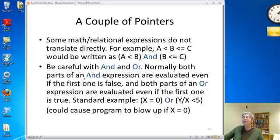Now, you have a couple things to watch out for. Informally, when we write math, we sometimes write something like A less than B less than or equal to C. You cannot do that in programming. Okay, you have to break it up. We know what this means. It means A is less than B and B is less than or equal to C. When we're doing programming, we have to put the and in there explicitly, write A less than B and B is less than or equal to C.